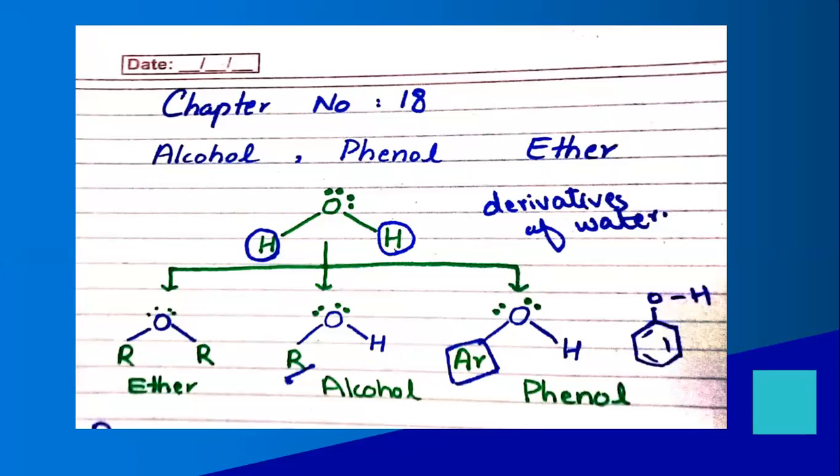Water consists of two hydrogen atoms and one oxygen atom with two lone pairs of electrons. In the water molecule we have two hydrogen atoms and one oxygen atom. So here we have alcohol, phenol, and ether — these three are all water derivatives. How are these water derivatives?